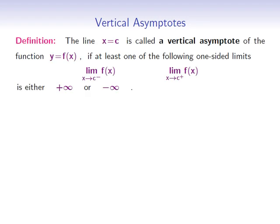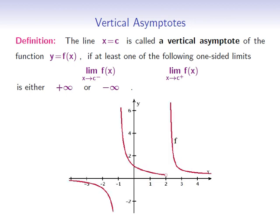We now proceed to discussing vertical asymptotes. The procedure for finding vertical asymptotes is quite different from the one we used for horizontal asymptotes. Also, a function can have more than two and even infinitely many vertical asymptotes. The line x equals c is called the vertical asymptote of the function y equals f of x if at least one of the following one-sided limits of f at c is either positive or negative infinity. For instance, this function has two vertical asymptotes. x equals negative 1 is a vertical asymptote since the right-hand limit of f at negative 1 is infinity and the left-hand limit is negative infinity.